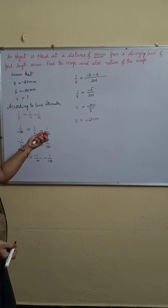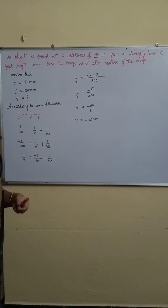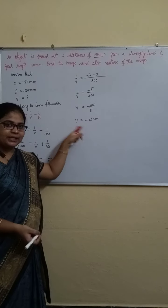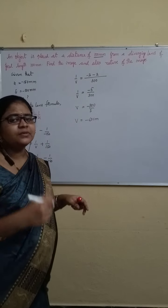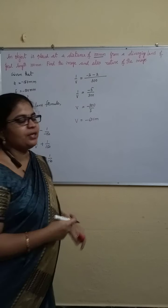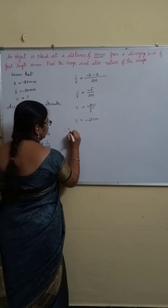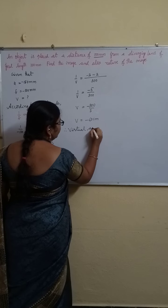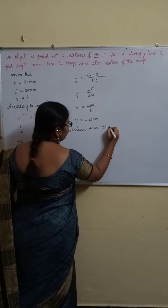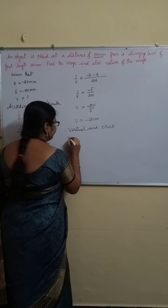So here, it is a diverging lens. So here, the V value minus symbol indicates that it is a virtual erect image. Virtual and erect image is formed.